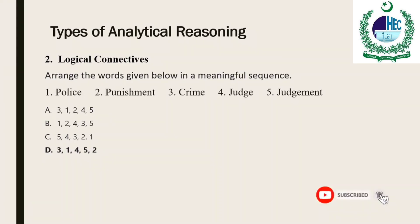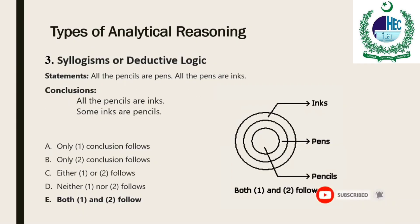Please have a look at the example. A syllogism is a three-part logical argument based on deductive reasoning, in which two premises are combined to reach a conclusion. So long as the premises of the syllogism are true and the syllogism is correctly structured, the conclusion will be true. An example of a syllogism is: all mammals are animals; all elephants are mammals; therefore, all elephants are animals.